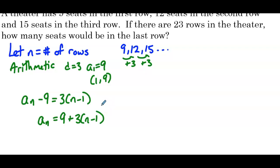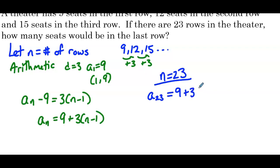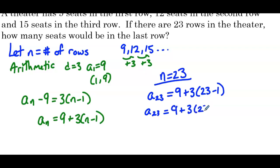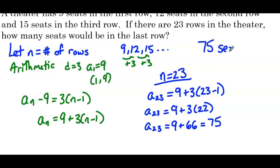Now that we have our explicit formula, we can use it to answer the question of how many seats would be in the last row — the 23rd row. So n equals 23. We substitute that in: a sub 23 equals 9 plus 3 times 23 minus 1, so a sub 23 equals 9 plus 3 times 22, which is 9 plus 66, which is 75. So there are going to be 75 seats in the last row.